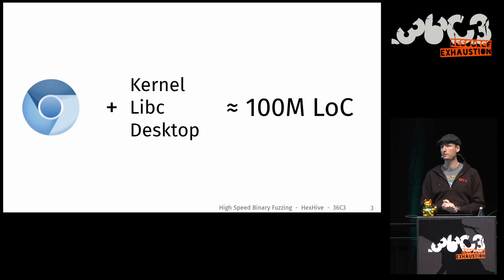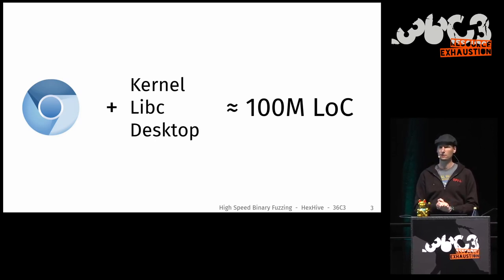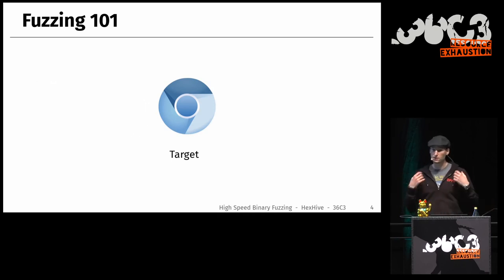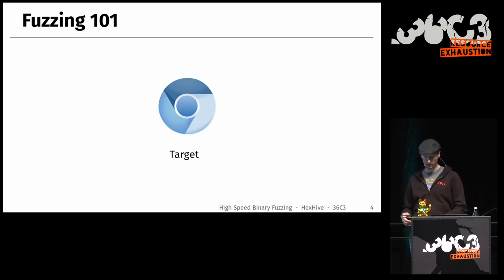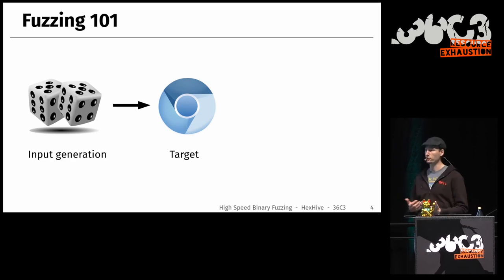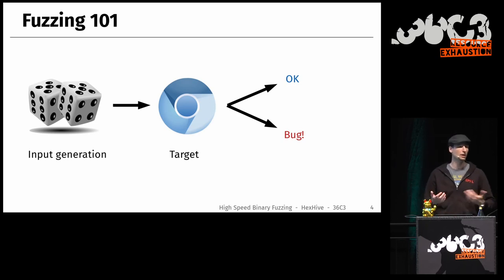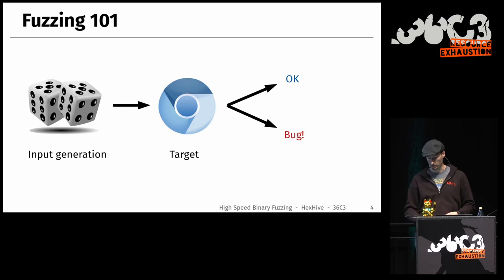Who's worked on fuzzing before? Wow, that's a bunch of you. Do you use AFL? Most of you use AFL. LibFuzzer? About 10-15% LibFuzzer, 30% fuzzing with AFL. Good knowledge of fuzzing in the room. For those that haven't run fuzzing campaigns yet: it's a simple software testing technique. You take a binary, say Chrome, as a target, run it in some execution environment, and fuzzing consists of input generation that creates new test cases, throws them at your program, and checks what happens. Either everything is okay, or you get a bug report. If you have a bug report, you can find the vulnerability, maybe develop a POC, and come up with an exploit or patch. That's fuzzing in a nutshell.